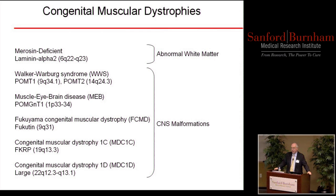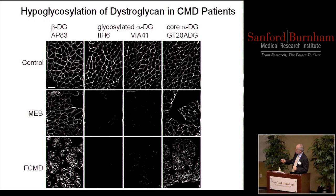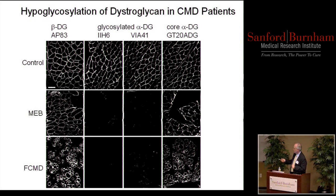Our laboratory works with muscle biopsies from patients, and in most cases they can be diagnosed quite quickly. But around 10 years ago, we started receiving biopsies that were more difficult. When we stained with antibodies to beta-dystroglycan they looked quite normal, as did staining with antibodies to the core protein of alpha-dystroglycan. But we had two antibodies that recognized the glycosylated form of alpha-dystroglycan, and when we stained with those monoclonals, there was no staining — the first suggestion that the protein was present but not fully glycosylated.